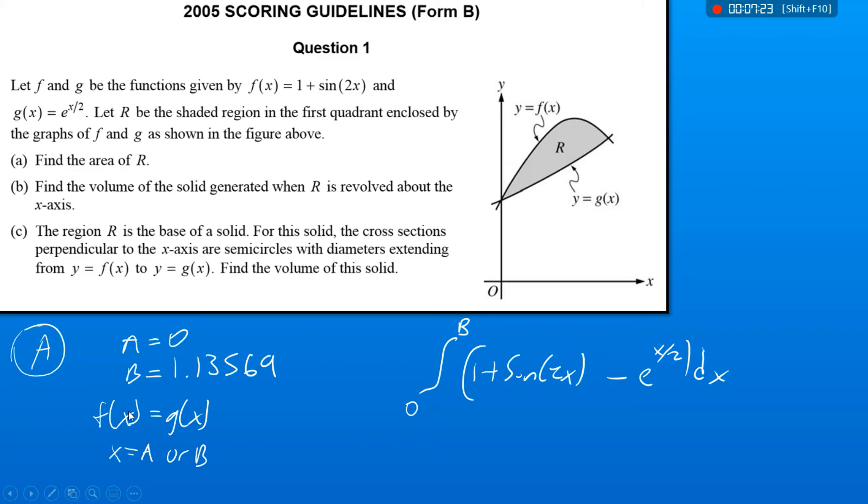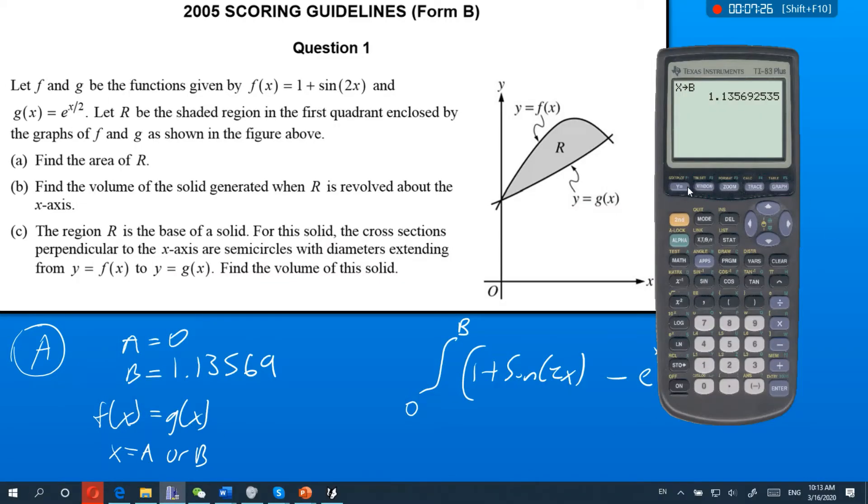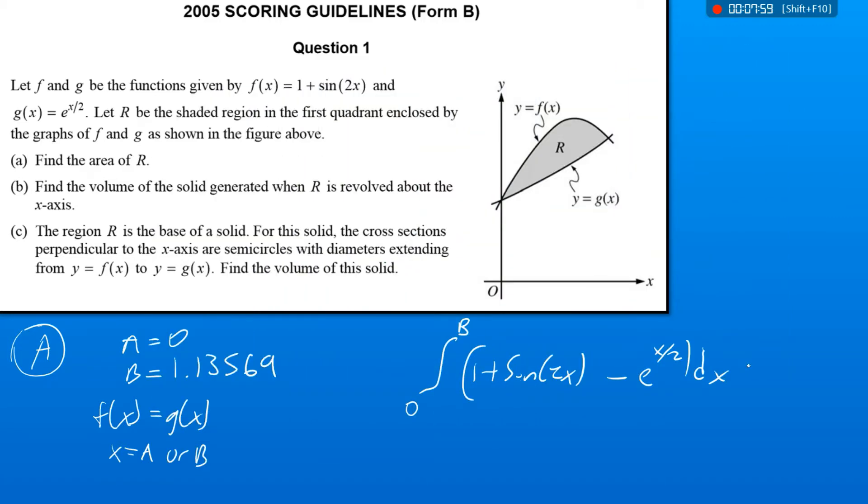Okay, so I'm going to go ahead and integrate that. I've already got both of these in the calculator, so I'm just going to do y1 minus y2 for my integral. So this will be math 9. And I'm going to integrate. So that's variables, y variables, function y1 minus variables, y variables, function y2 in terms of x from 0 to b. We've got 0.429. So that's our answer. Any questions so far?